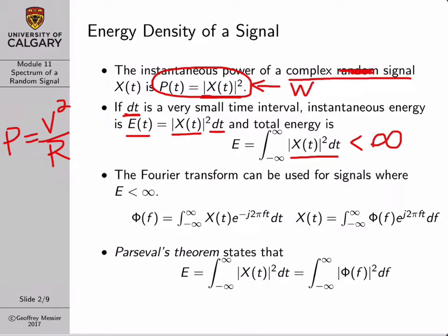You would have dealt mostly with finite energy signals in undergraduate work. Infinite energy signals are signals we model as stretching from minus infinity to plus infinity on the time axis—typically very long signals like a long noise signal or a random bit stream or random bit sequence where there's no logical beginning or ending to the signal. Infinite energy signals arise in electrical engineering all the time, and in the next few slides we'll talk about how to deal with them.